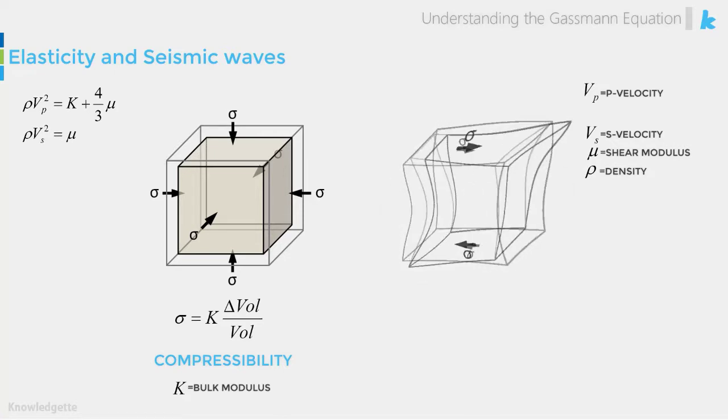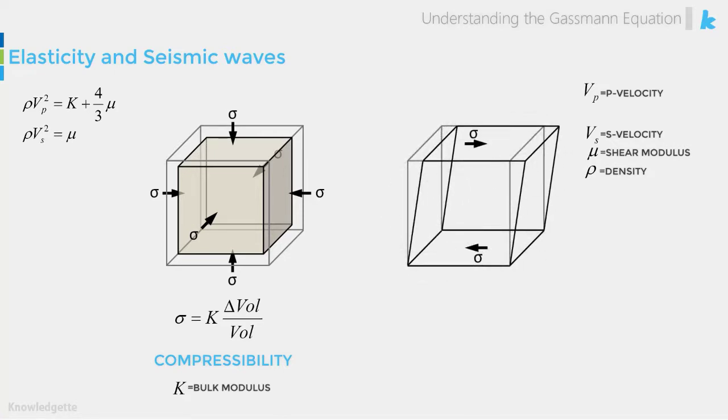The stress tangential to the cube will change its shape slightly. This strain is indicated by epsilon. The shear modulus is the ratio of the applied tangential stress to the amount of strain. The shear modulus is a measure of the rigidity of the rock.